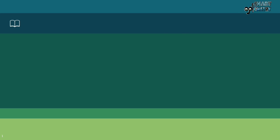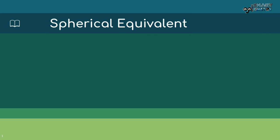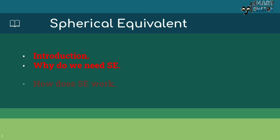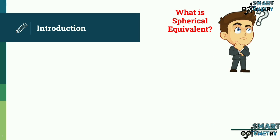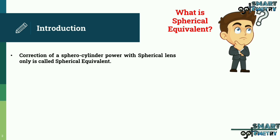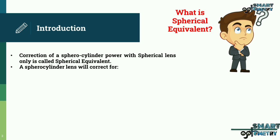Today we will discuss spherical equivalent and cover: introduction, why we need spherical equivalent, how it works, and an example with ray diagram. Starting with the introduction: correction of a sphero-cylinder power with a spherical lens only is called spherical equivalent. A sphero-cylinder lens corrects for astigmatism along with myopia or hyperopia.